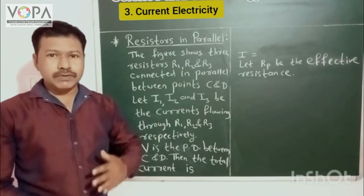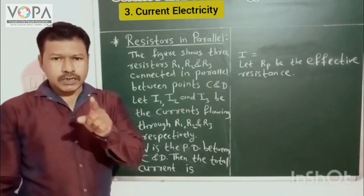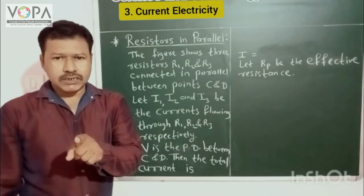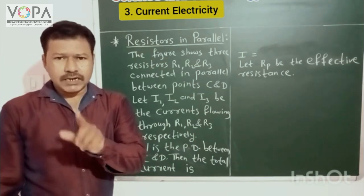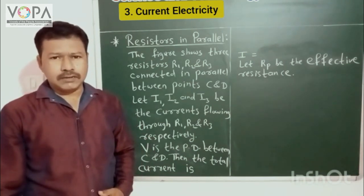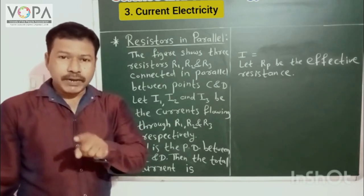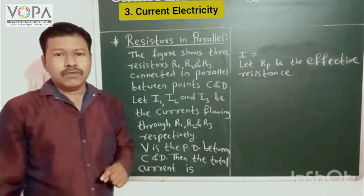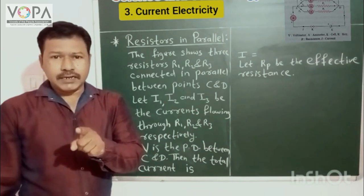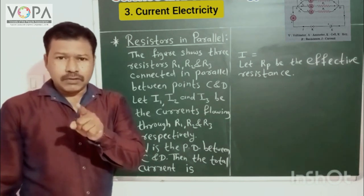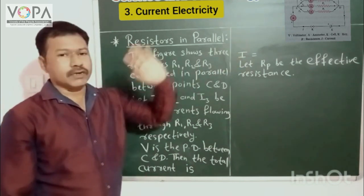In this video, we are going to derive the expression for effective resistance when the resistors are connected in parallel. The resistors are said to be connected in parallel when their ends are connected at both sides, as shown in the figure.